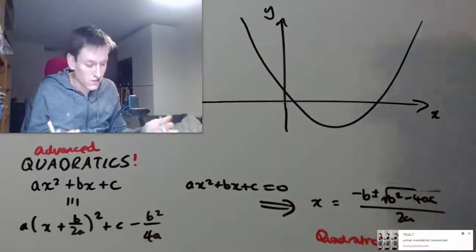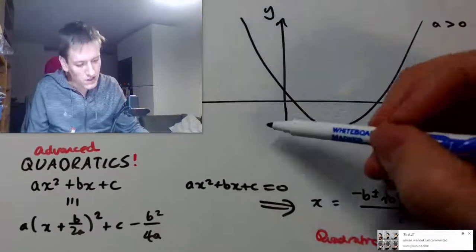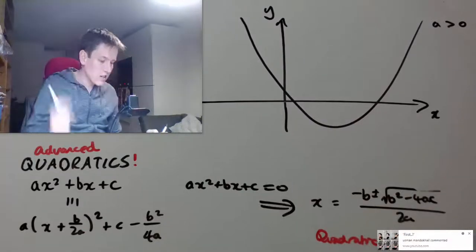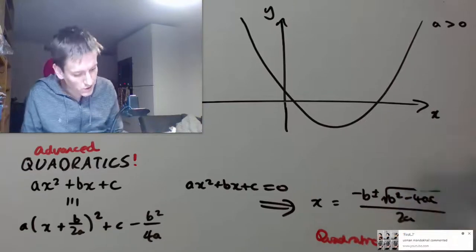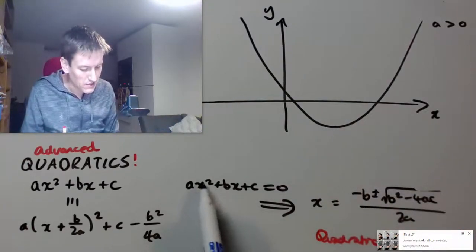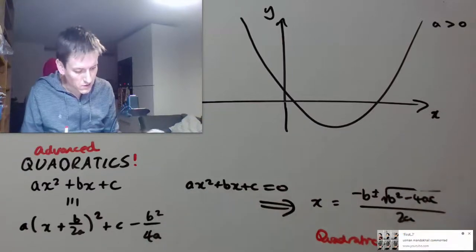First thing you notice here is I've drawn this for the case where a is greater than 0. If a is less than 0 we'd have a quadratic the other way up of course. So let's have a look at some axes crossing points. So firstly, well the y axis crossing point is the easiest one. If I put in x equals 0 I just get 0 plus 0.